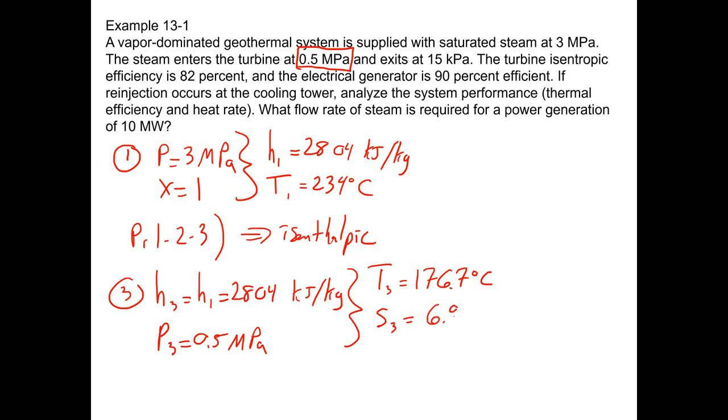Let's go ahead and take the entropy. In this case, it would be 6.945 kJ/kg·K. The turbine efficiency is given to us as 0.82.